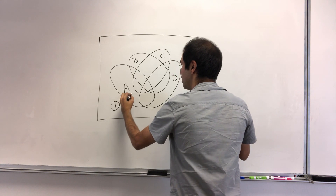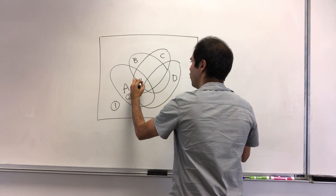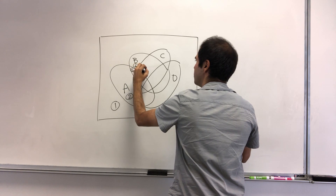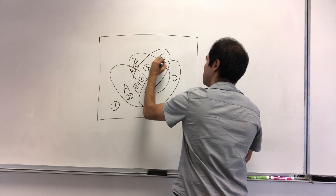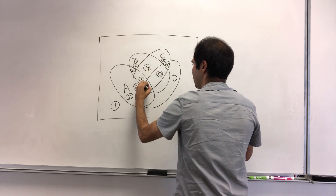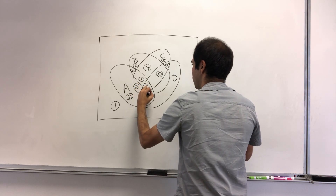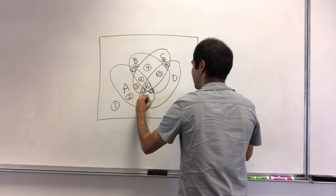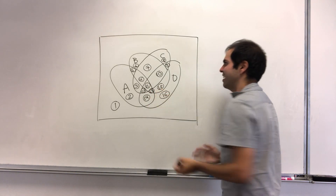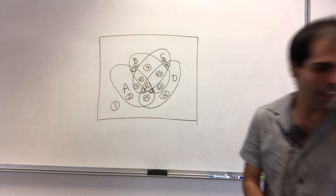You can count them: one, two, three, four, five, six, seven, eight, nine, ten, eleven, twelve, thirteen, fourteen, fifteen, sixteen — and then everything is represented that way.